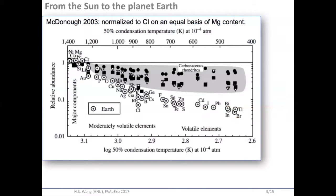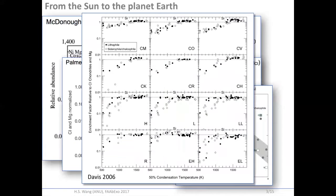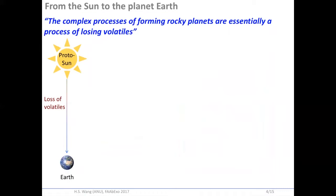That has been evident by our observation of the solar system, by comparing the terrestrial planet to CI chondrite contrast and as the proxy of the Sun, and also by a lot of other studies on this topic and more extensive comparisons between various chondrites. This basically tells us that the complex process of forming a rocky planet is essentially a process of losing volatile elements.